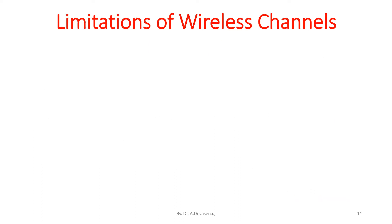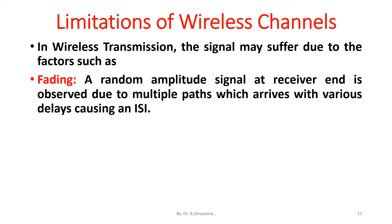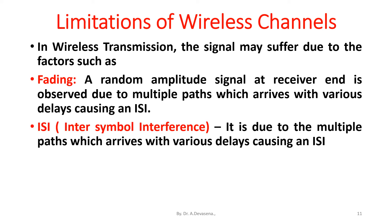Limitations of wireless channels: in wireless transmission the signal may suffer due to factors such as fading, where a random amplitude signal at the receiver end is observed due to multiple paths which arrive with various delays, causing ISI — inter-symbol interference.